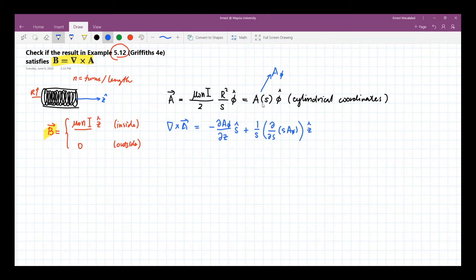As you will notice again that A is a function of s, so automatically this is cancelled, right? Because this is derivative with respect to z.